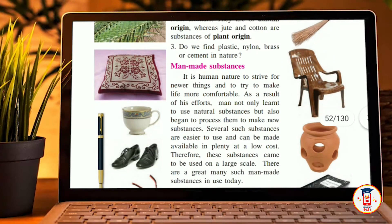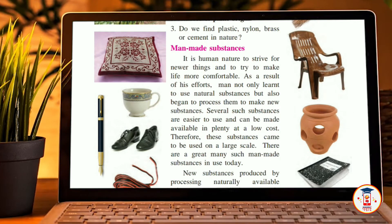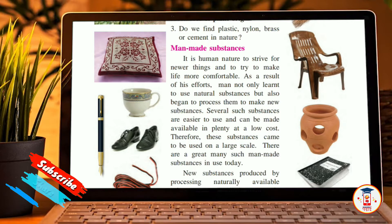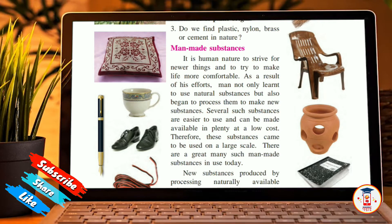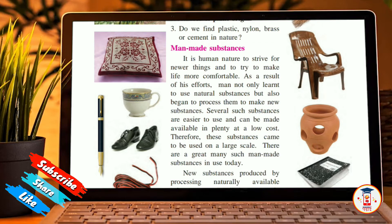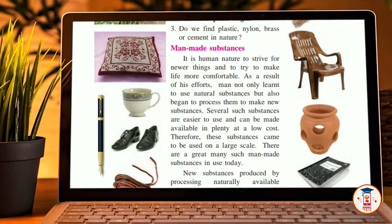Now our topic is about man-made substances. It is human nature to strive for new things and to try to make life more comfortable. As a result, man not only learned to use natural substances but also began to process them to make new substances. Several such substances are easier to use and can be made available in plenty at a low cost. Therefore, these substances came to be used at a very large scale.